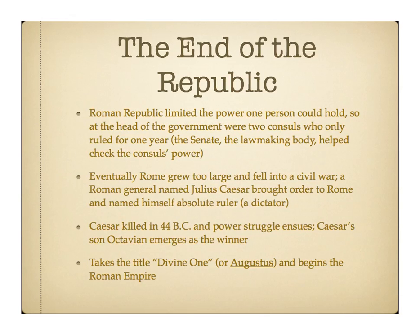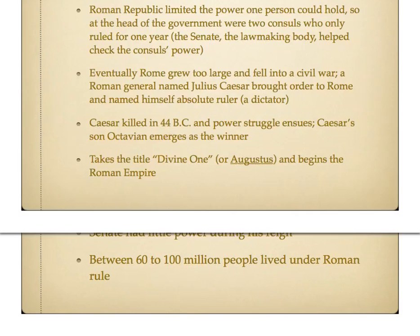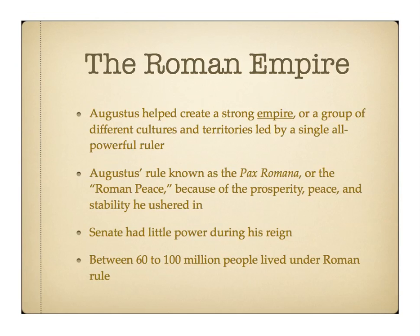Immediately after, you saw a power struggle ensue. The Senate killed Caesar thinking they would be the heroes of the Republic, but the people loved Caesar. Caesar's adopted son Octavian emerged as the winner. What you saw Octavian do was kind of similar to what Caesar did — he took a title for himself, called himself the Divine One or Augustus, and he thus began the Roman Empire. Augustus's rule was very important. He created a strong empire — remember, an empire is a group of different cultures and territories led by a single all-powerful ruler. Augustus brought prosperity, peace, and stability. His rule was known as Pax Romana, or the Roman peace.